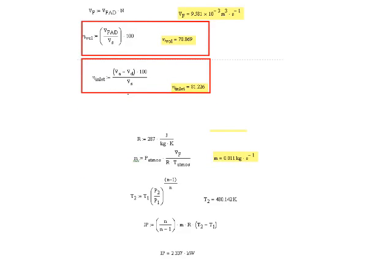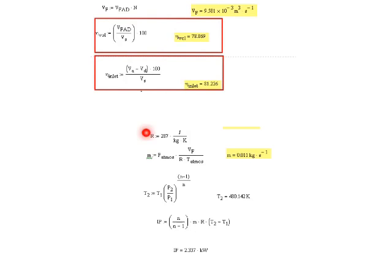After that, we need to calculate the mass flow rate. We know for air, the gas constant R = 287 J/(kg·K). We can calculate the mass flow rate, which we get as ṁ = 0.011 kg/s.